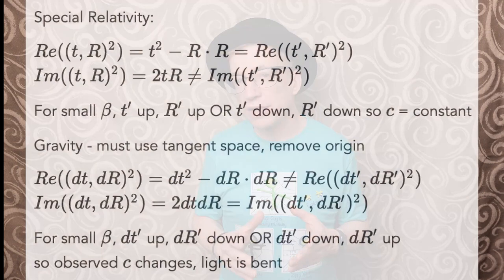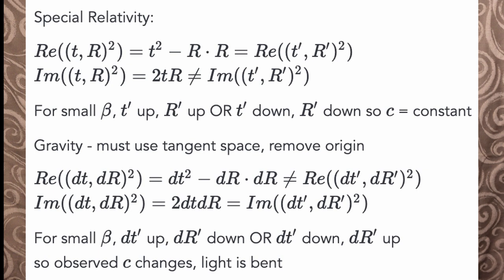For special relativity, we take the square and look at the real part, and we see the Lorentz invariant interval — meaning two observers are moving at a constant velocity relative to each other. And when we think about the imaginary part, well, actually we usually don't, which is a shame, because that can tell you exactly the motion between those two observers — whether it's along x, y, or some combination. The answer is there.